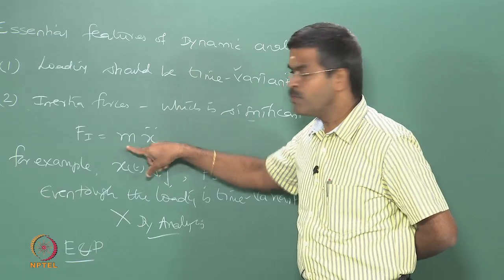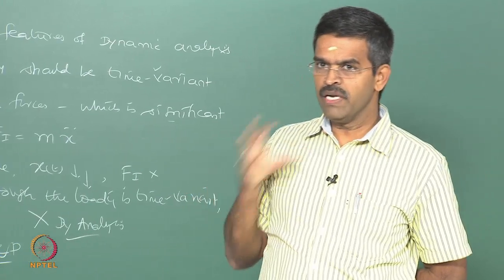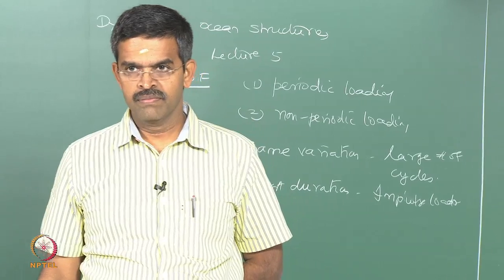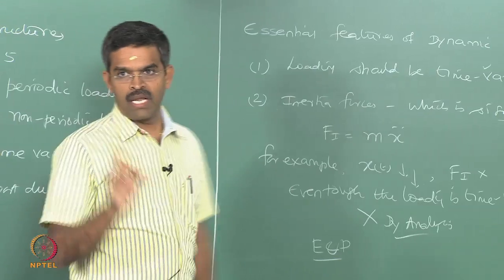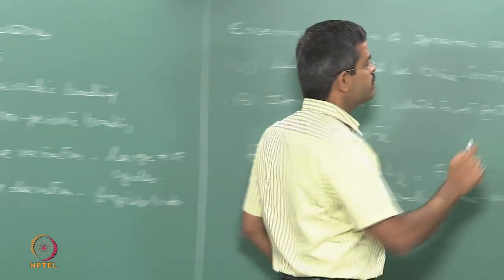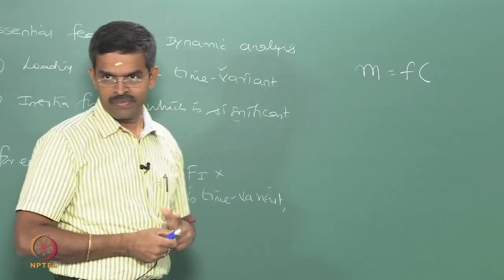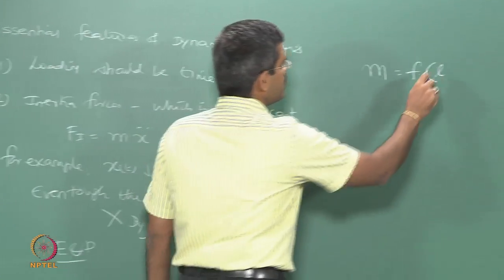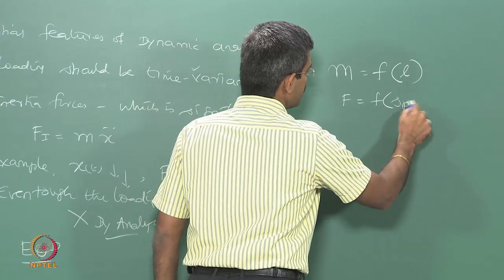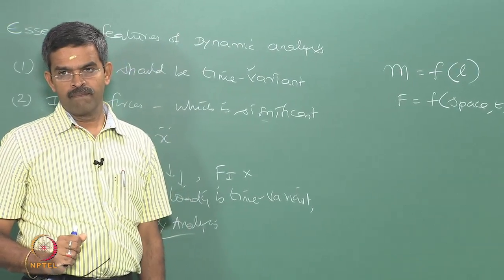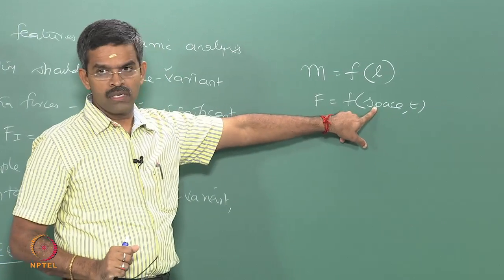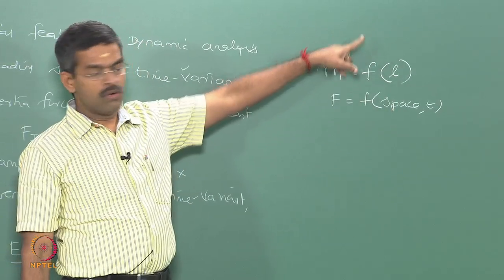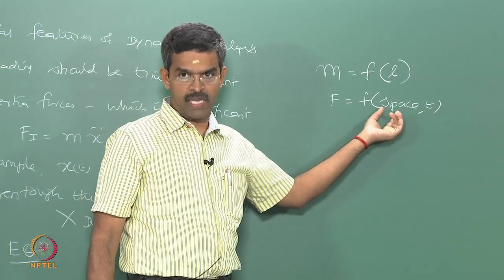Mass in general is present continuously for the entire length of the member, so mass becomes a function of the length of the member. Force is a function of space and time. In aerodynamic or wind forces, the force depends on height — the z-naught value from the mean terrain quantifies the wind force. So space variation is also present. You cannot do a problem where both are connected without using partial differential equations, because both are interconnected.